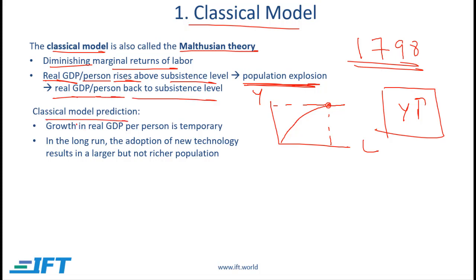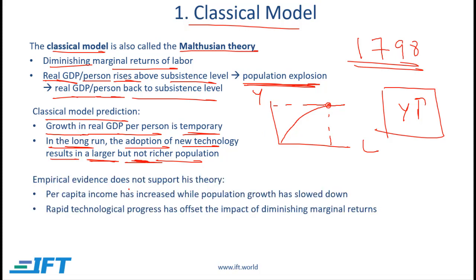So the prediction of the classical model is that we can have a growth in real GDP per person, but this growth is temporary. In the long run, the adoption of new technology results in a larger but not richer population — larger because we have more output which can feed more people, but not richer because the larger output is also spread across more people.